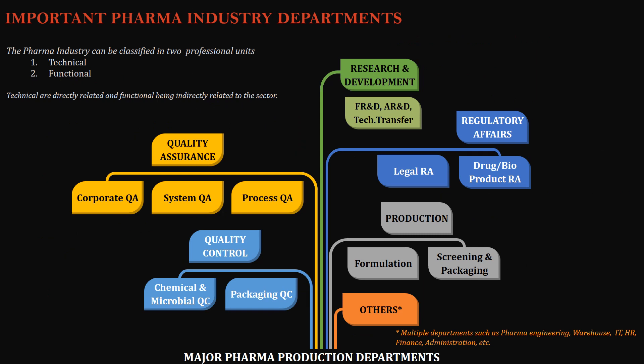The major pharma industry is classified into two professional units: the technical unit and the functional unit. The technical unit requires pharma knowledge, whereas the functional unit requires relevant domain knowledge but not necessarily pharma knowledge. Technical departments include: Research & Development — with sub-classifications of formulation R&D, analytical R&D, and technology transfer; Quality Assurance — covering corporate QA, system QA, and process QA; Quality Control — with chemical, microbial, and packaging QC; Regulatory Affairs — including legal RA and drug/biological product RA teams; and Production — covering formulation, screening, and packaging. Functional departments include pharma engineering, warehouse, IT, HR, finance, and administration.